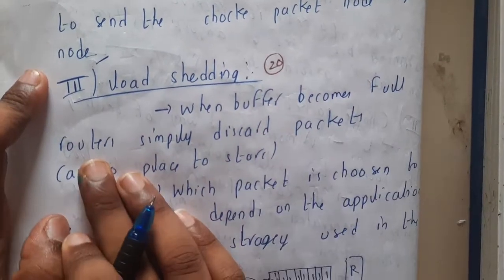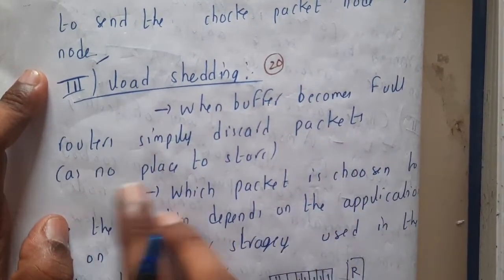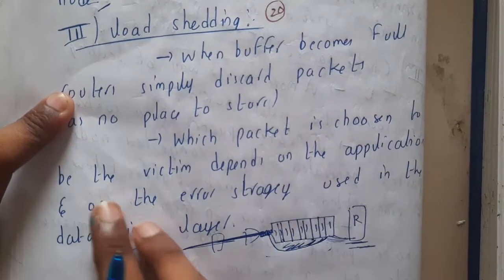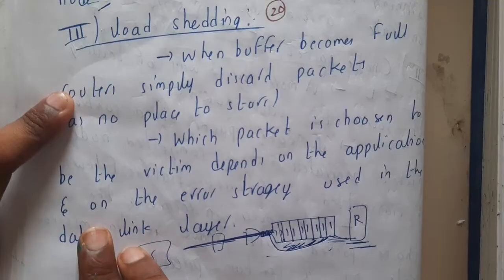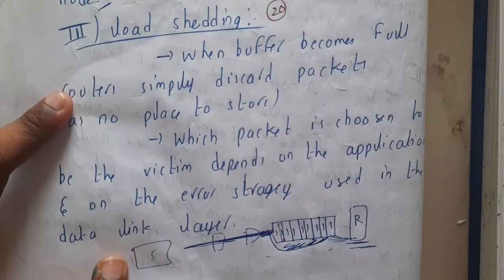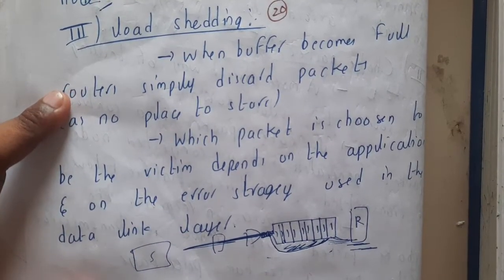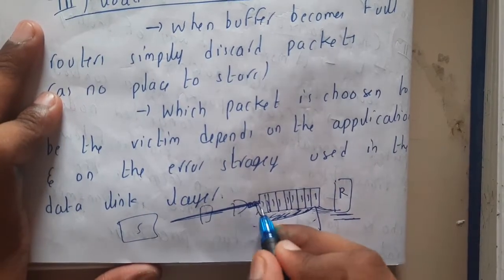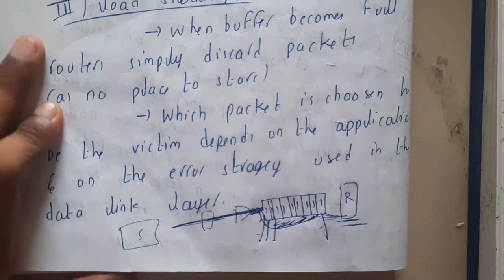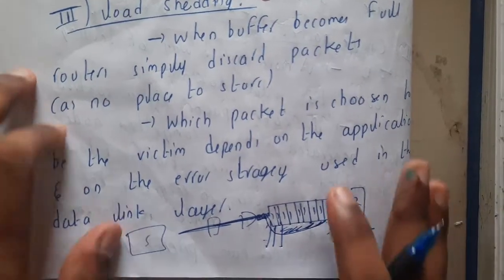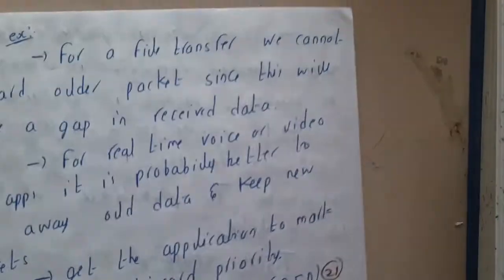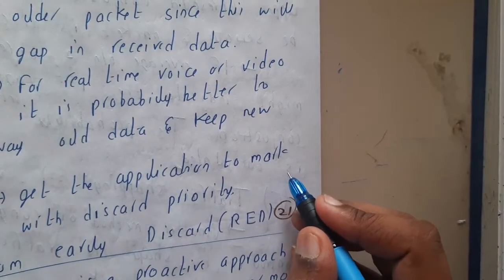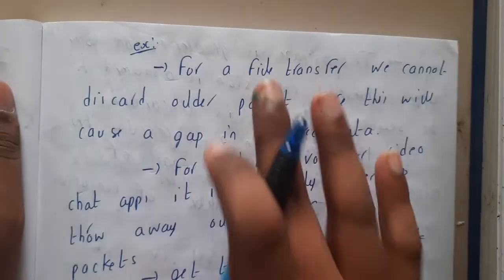When a buffer becomes full, simply discard the packets as there is no place to store them. Which packet is chosen as a victim depends on the application and on the error strategy used in the data link layer. Should you remove the first packet or the last packet? It depends completely on the application.